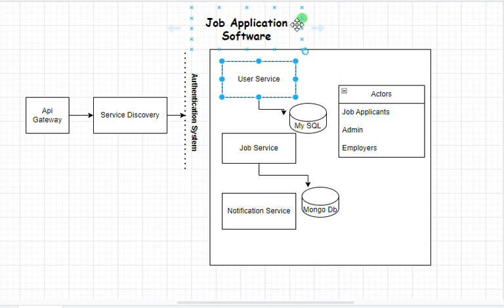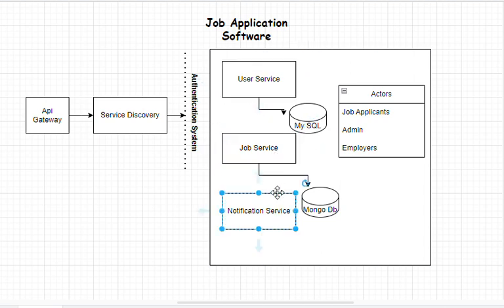Microservices are basically referred to as a set of independent services. Each of them is an application that can work on its own — it's a full application on its own — or it actually communicates with other services that are all included in the microservice. Typically you have a user service, job service, education service, and all of these services interact with each other, sending requests and responses.